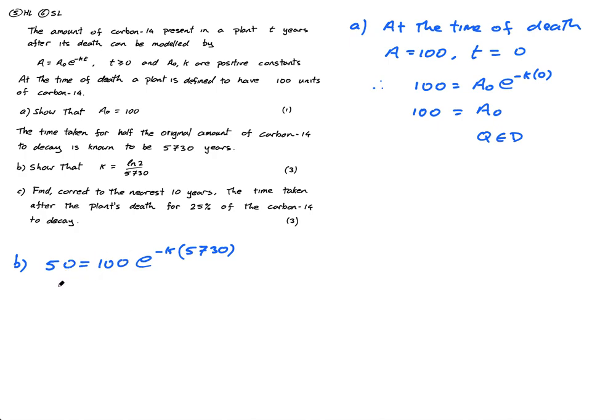50 divided by 100 is just going to be 1 over 2. So 1 over 2 is equal to E to the negative 5,730 K, which means if I use logs, I can say negative 5,730 K equals ln of a half. And ln of a half is just negative ln of 2. Therefore, K is equal to negative ln of 2 divided by negative 5,730, which is equal to ln of 2 over 5,730.